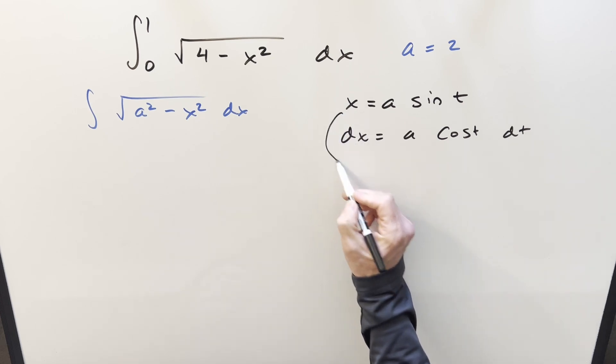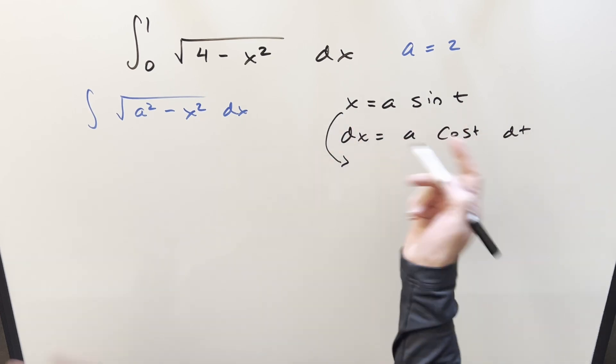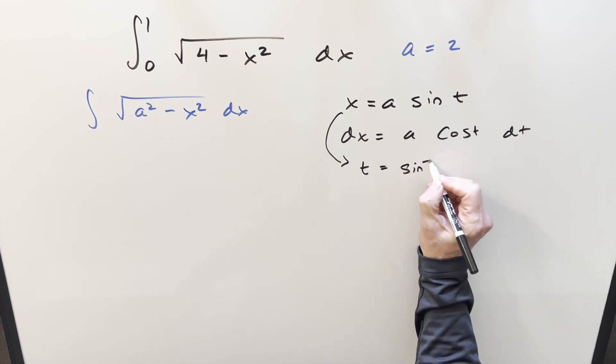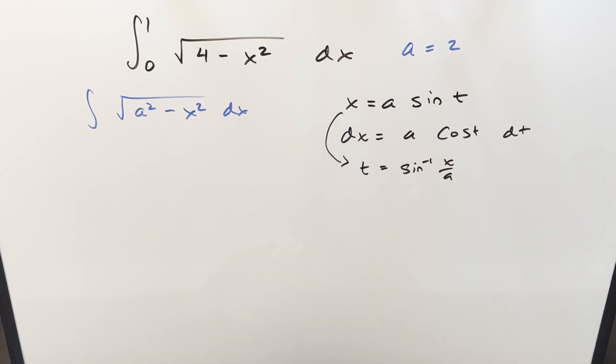And then let's get our value for, let's isolate t. So what's going to happen when we take the inverse and we shuffle things around, we're going to have t equal to arc sine of x over a.